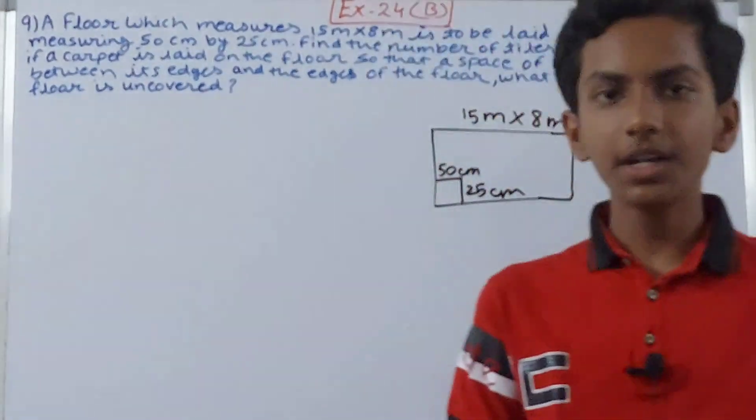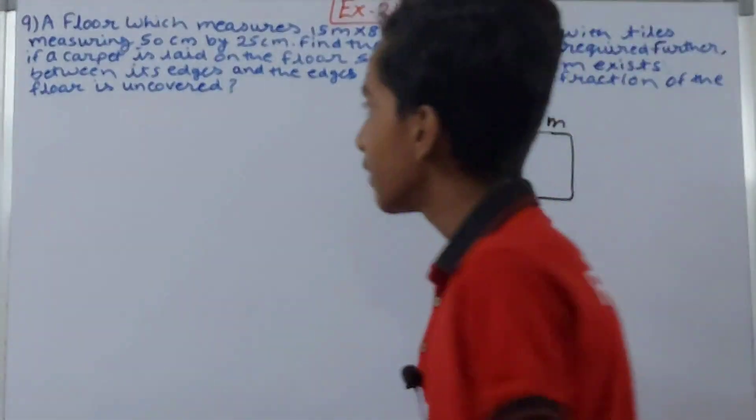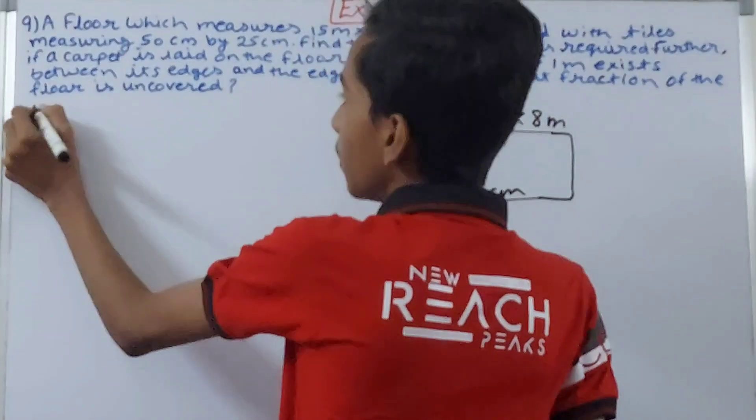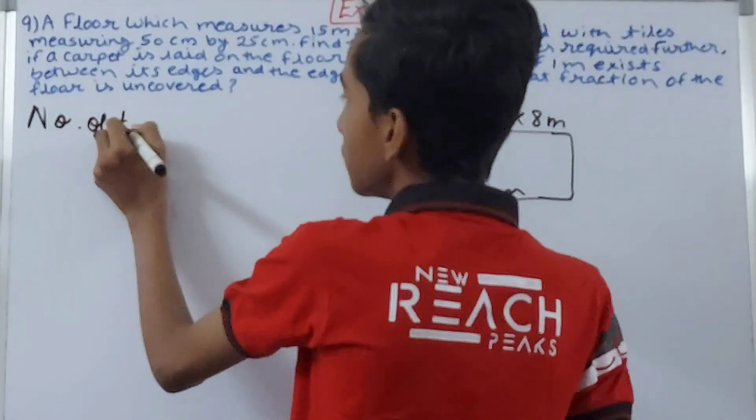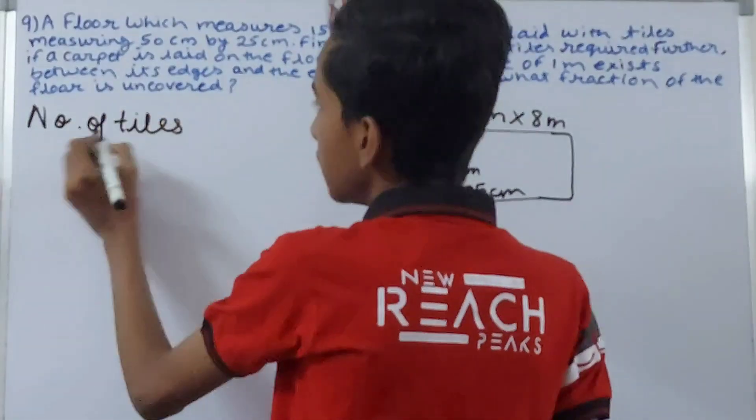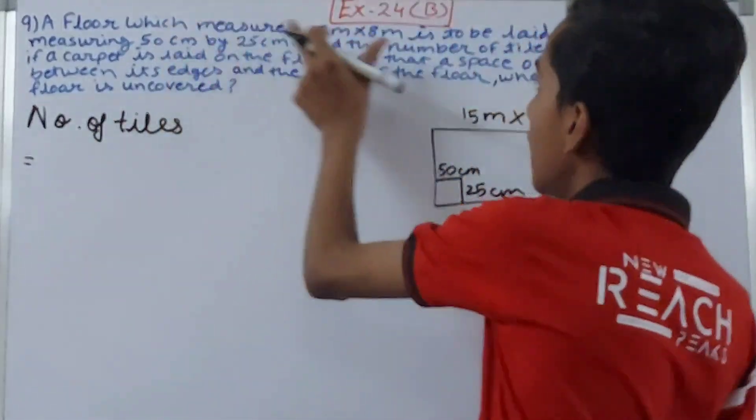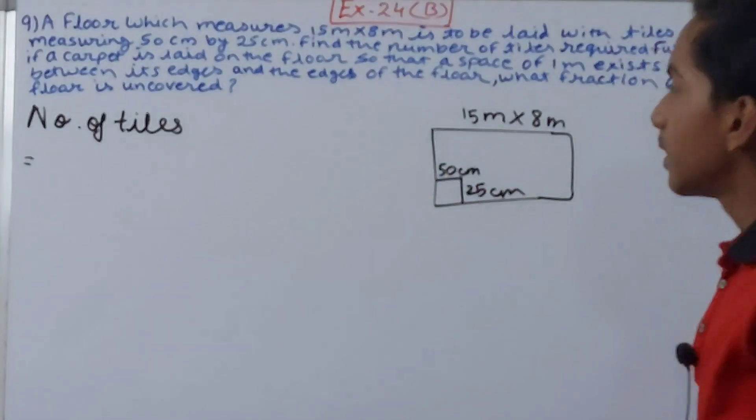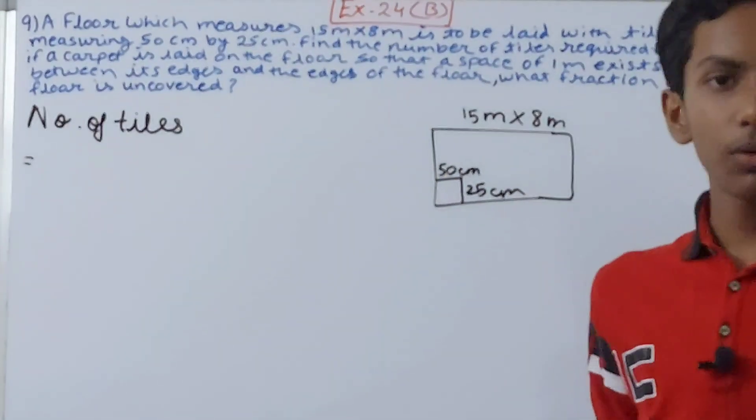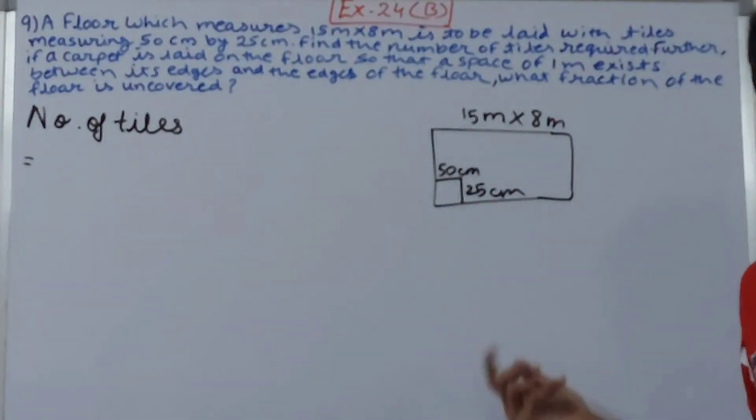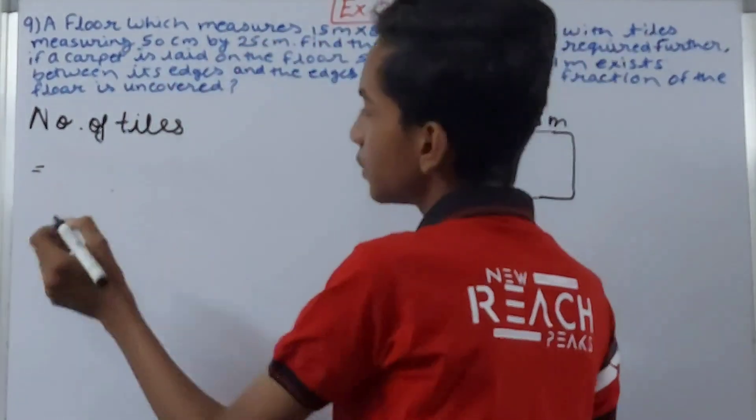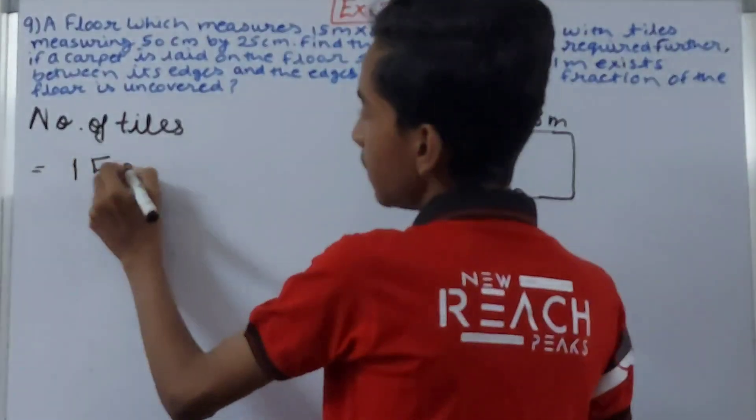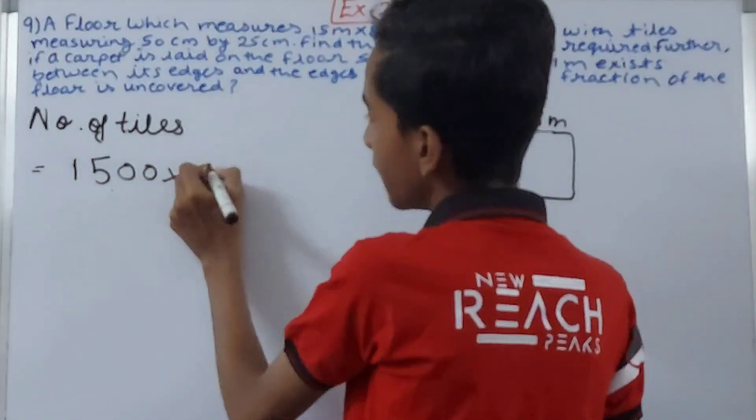Now how many tiles are we going to put? For that, very simple: number of tiles. We have done this in the previous question so I won't be explaining it much. Simply calculate the area of the floor and divide it by the area of one tile. Convert 15 meters and 8 meters, so 15 meters is 1500 into 8 is 800.